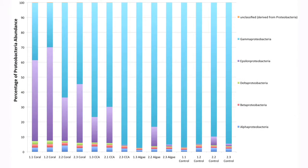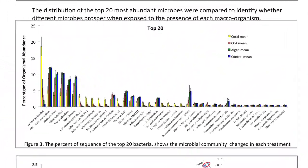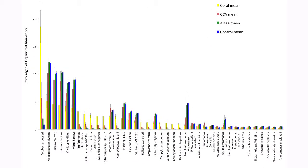Comparing the coral, we see there's a lot more Epsilon proteobacteria compared to the CCA, and more Epsilon proteobacteria in the CCA compared to the algae. Looking at the proteobacteria, we were able to break that down and look at the distribution of the seven classes. We could see that coral had more of one class, whereas algae and control had a higher abundance of a different class. The abundances were very similar in each of our replicates, showing consistency between treatments. Figure 3 looks at the abundance of the top 20 bacteria in each macroorganism treatment, showing a higher percentage of some bacteria in one treatment compared to others.